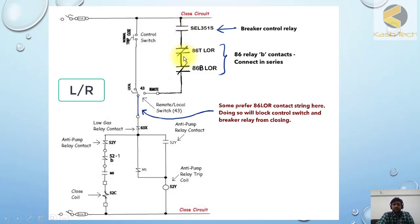And it will be going through both lockout relays. If any lockout is operated, then closing will not happen. These are interlocking checking. After that, it will come down further. Then low gas relay will check that SF6 pressure is okay in the breaker.